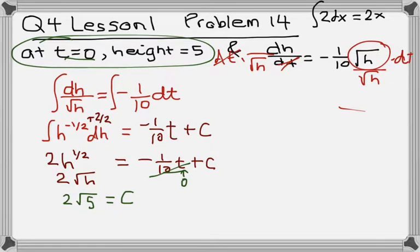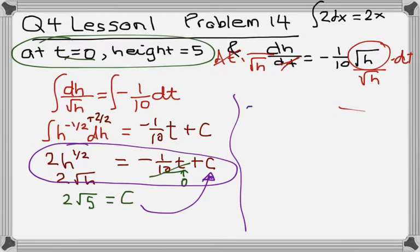And then the very last step is to plug it all in, to plug the C back into here and solve for h. So we take this equation and we rewrite it. We go 2 root h equals negative 1 tenth t, and then plus C. But instead of plus C, you write plus 2 root 5.